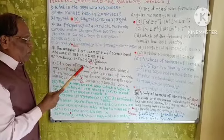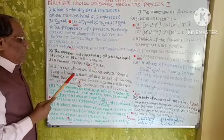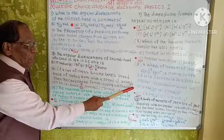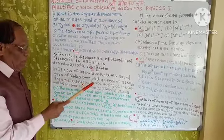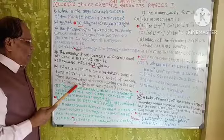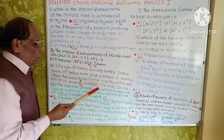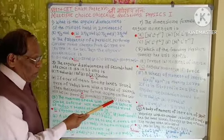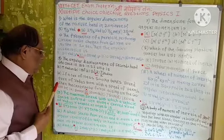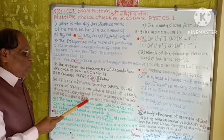Question 4: If a car of mass 500 kg takes a round turn of radius 50 meters with a speed of 36 km per hour, then the centripetal force acting on the car will be: A) 500 N, B) 1000 N, C) 750 N, D) 1200 N. The correct option is B, i.e., 1000 N.